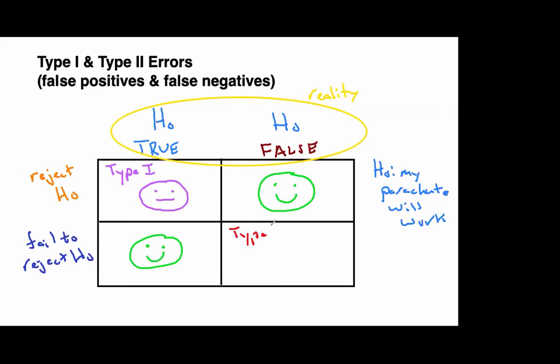I hope you see that that's very different if you end up making a Type II error. A Type II error has very, very, very different consequences. Does everyone see, can you see why that's the case? If the null is false, meaning my parachute is not going to work, and I failed to reject it, meaning I jumped with the faulty parachute. Well, that's not a good situation.